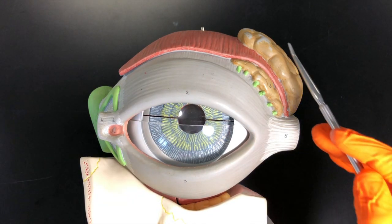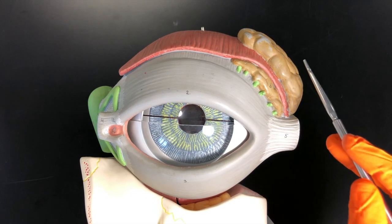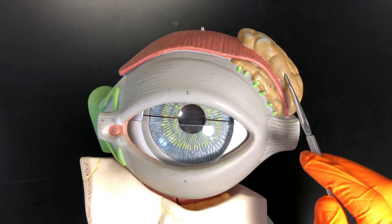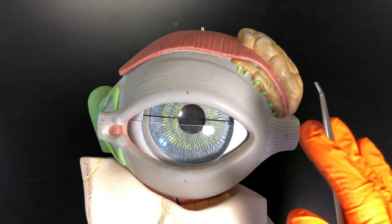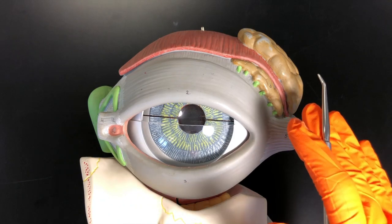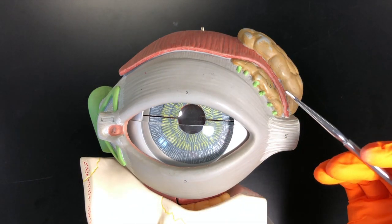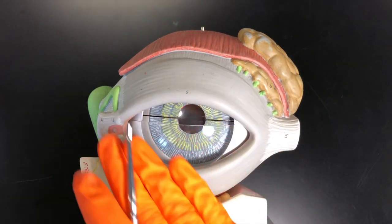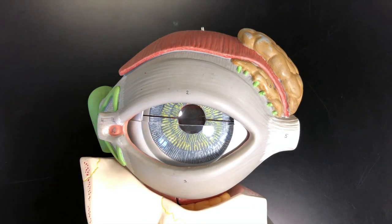Then we have the lacrimal gland, which is part of the lacrimal apparatus. This is a really important structure because it helps produce tears and fluid, and one of those things in the fluid is a really important antibacterial enzyme called lysozyme. When that's secreted and it washes over the surface of our eye, it helps protect and lubricate.